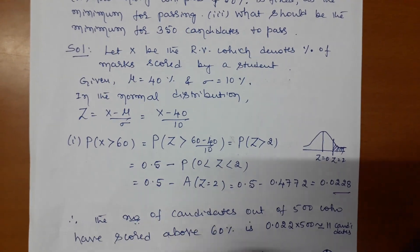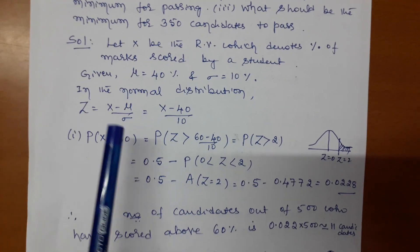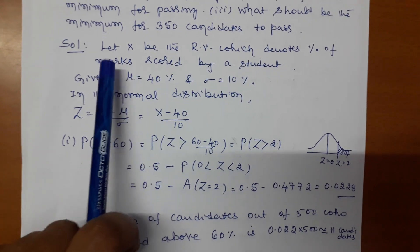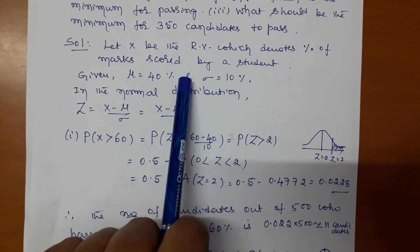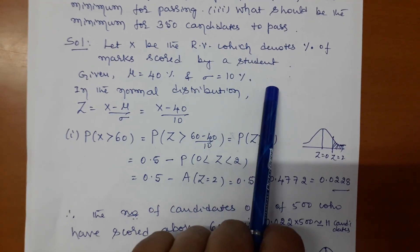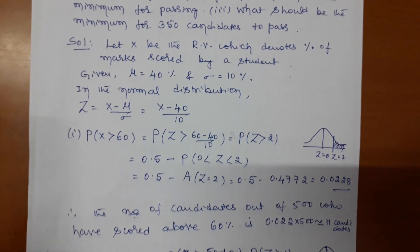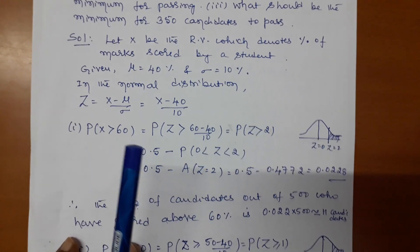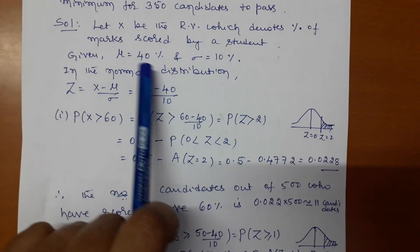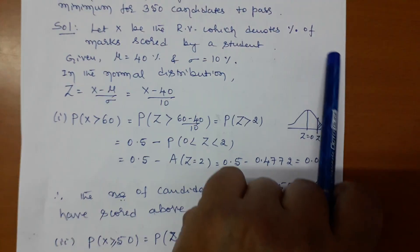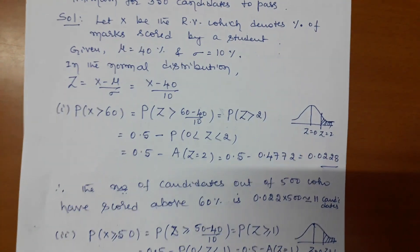Leave the mean and standard deviation in terms of percentage. Now, first define what X is. Let X be the random variable which denotes the percentage of marks scored by a candidate. The choice of 'candidate' is the same as 'student.'